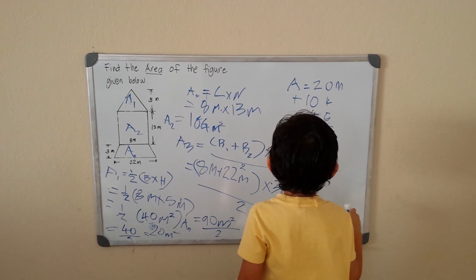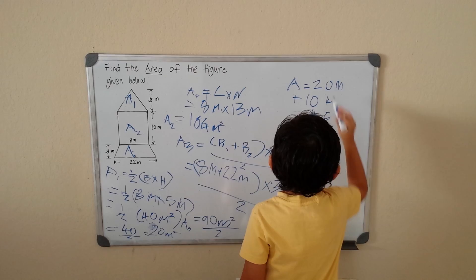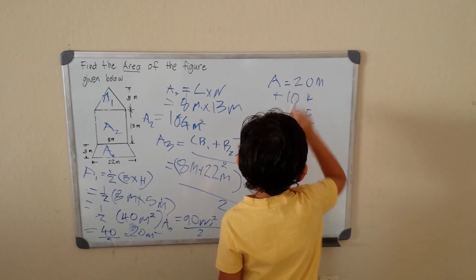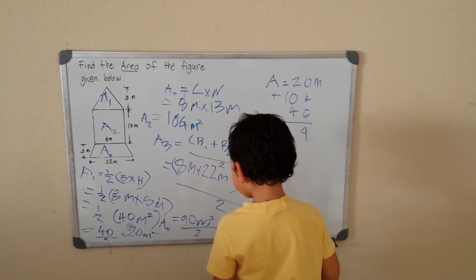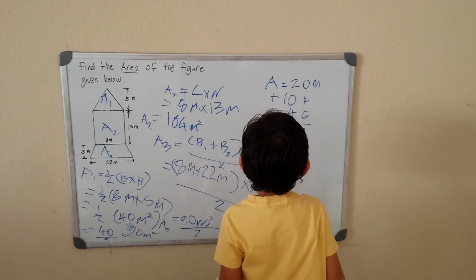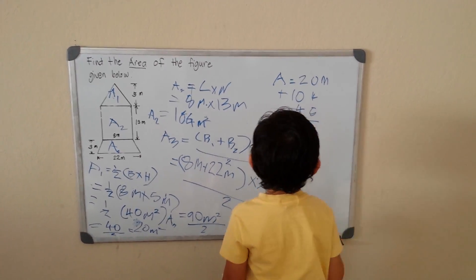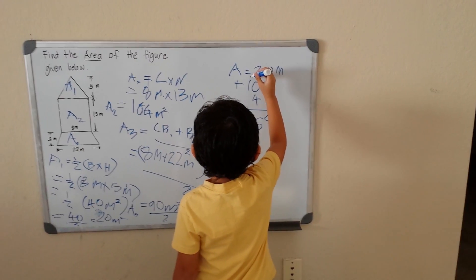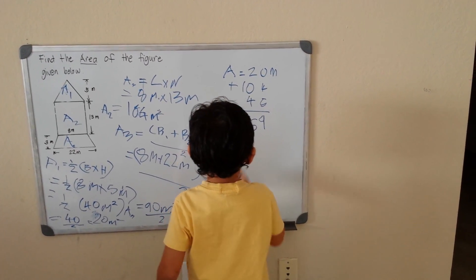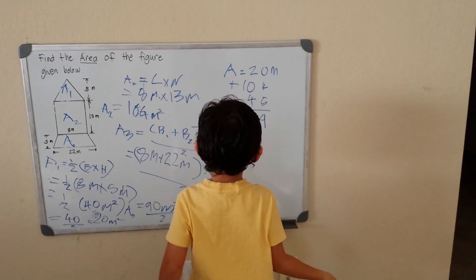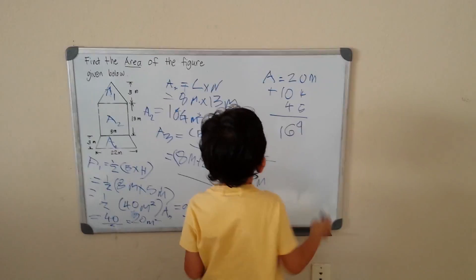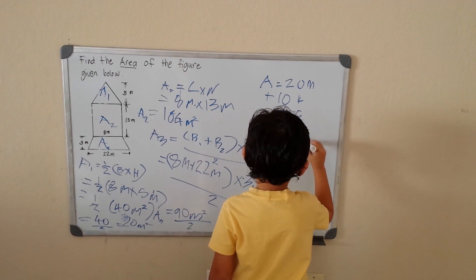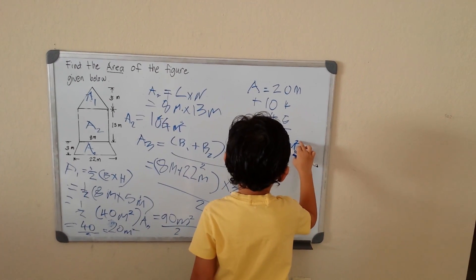Zero plus four is four, plus five is nine. Two plus zero plus zero is two, plus four is six, carry the one. One plus zero plus one is one, plus zero is one. We get 169. So our area for the rocket ship is 169 meters squared.